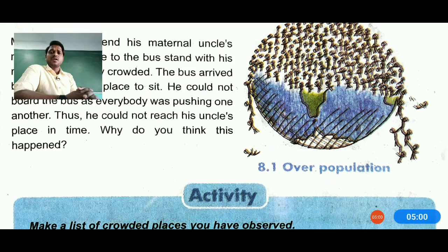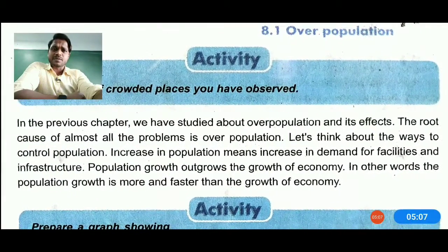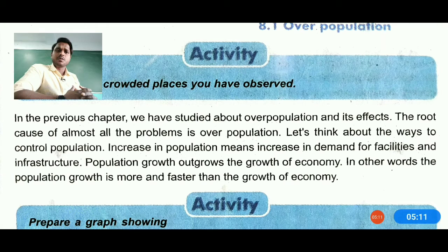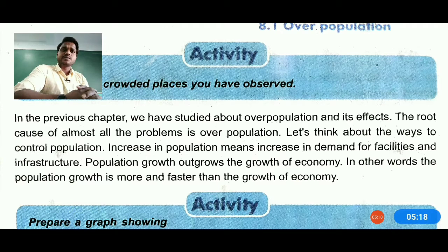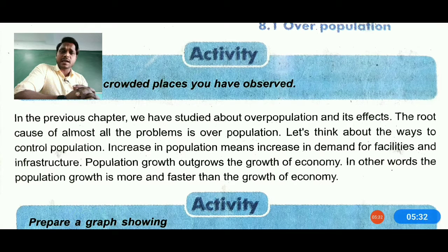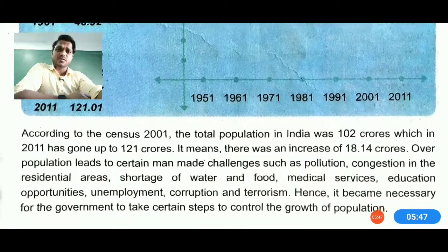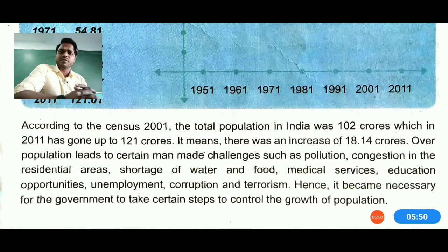In the previous chapter, we generally discussed overpopulation and its effects. The root cause of almost all problems is population. We need to think about how to control population. An increase in population means an increase in demand for facilities — infrastructure, schooling, money, food, and many other things. Population growth is much faster than economic growth; the economic growth is not equal to the population growth.